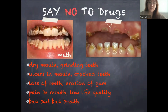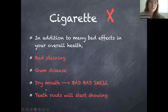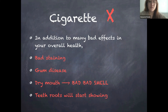Drugs are really bad for your teeth. A phenomenon known as 'meth mouth' shows how drugs can cause erosion of the gums and teeth, dry mouth, grinding, ulcers in the mouth, cracked teeth, loss of teeth, pain in the mouth, and really bad breath. Cigarettes are also bad for your mouth — they can cause staining, gum disease, bad smell due to dry mouth, and tooth root exposure.